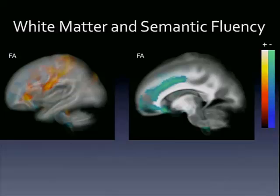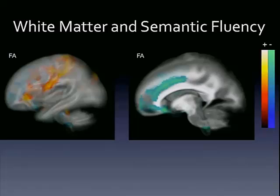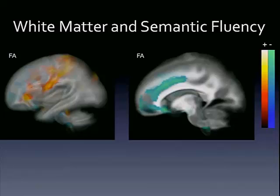When looking at the white matter relationship between white matter and the semantic fluency task, we see a very similar relationship to what we saw with age earlier. Semantic fluency is related to development of the superior longitudinal fasciculus, the arcuate fasciculus, and the uncinate fasciculus. It's also related to decreases in the mesial portions of the left hemisphere, specifically around the longitudinal fissure. This again could be related to solidification of hemispheric dominance. The relationships drop out when we control for age — measuring a specific aspect of age-related development, nothing unique above and beyond age. We didn't see any relationships between semantic fluency and mean diffusivity.